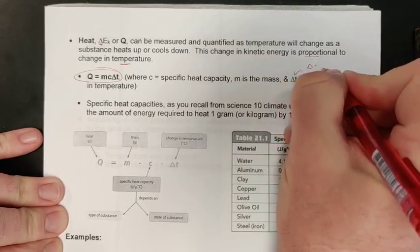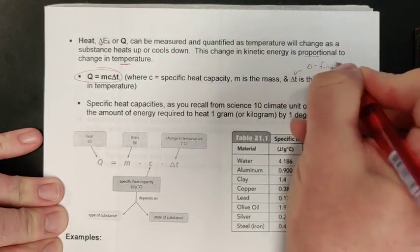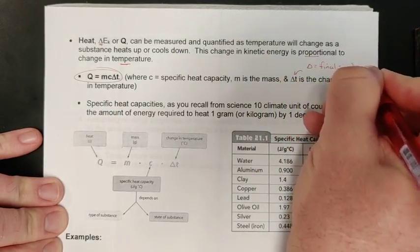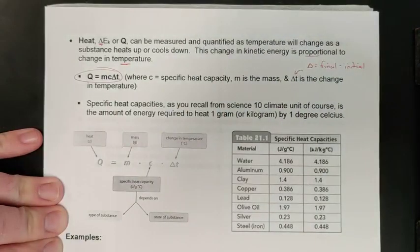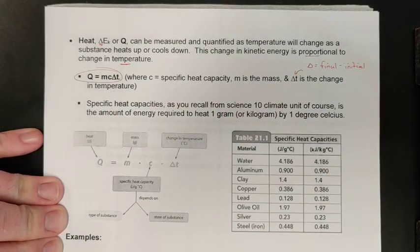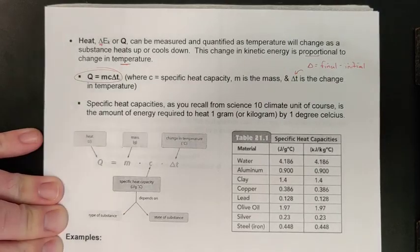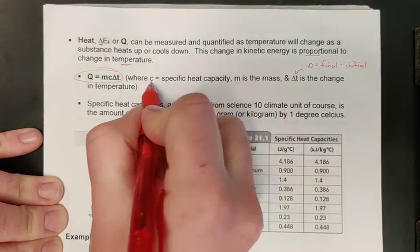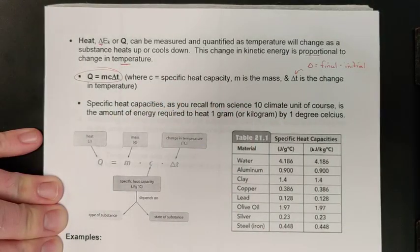Remember, delta is just always equal to a final value minus an initial value. If we do it in that order, we'll always get the right positive or negative integer, and we will have the difference between your starting and finishing temperatures. The last thing we have here is c, which is your specific heat capacity.